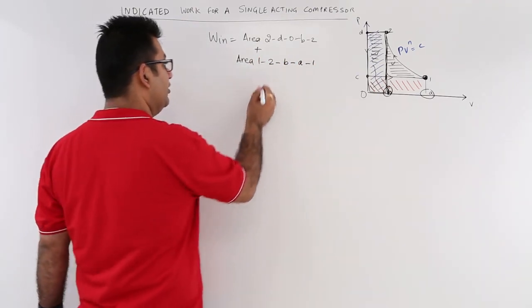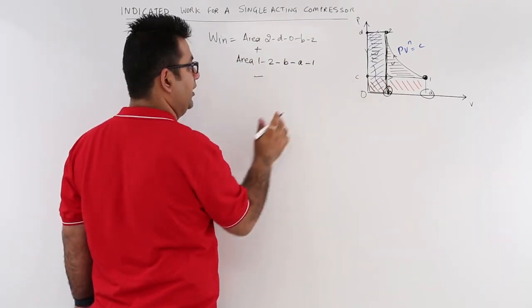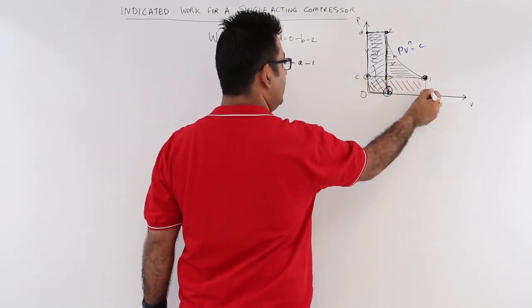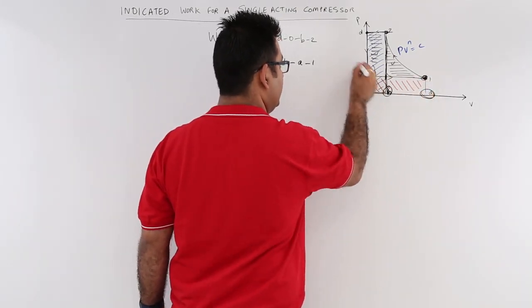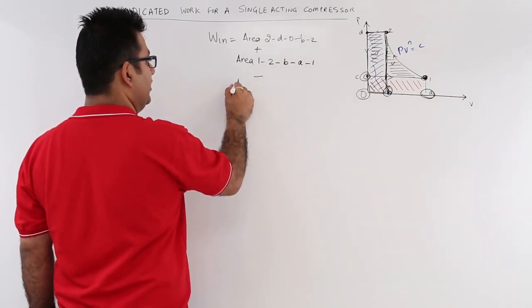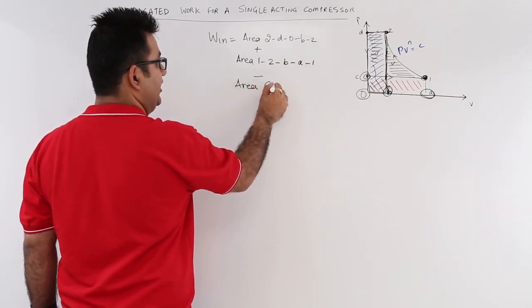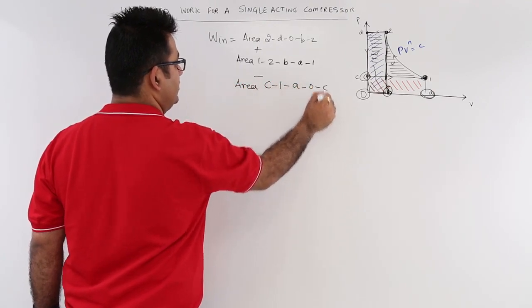And then you will have to subtract the bottom area which is C, 1, A, 0, C. So area C, 1, A, 0, C.